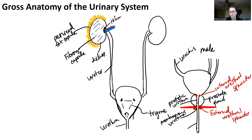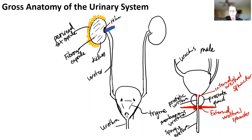And then the rest of the urethra is called the spongy urethra, because it's going to be surrounded by erectile tissue called the corpus spongiosum.